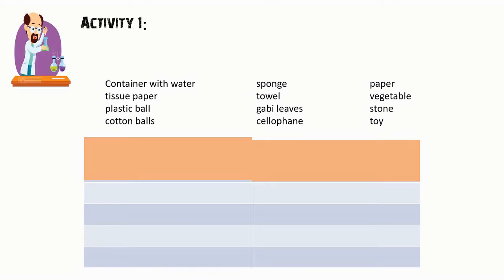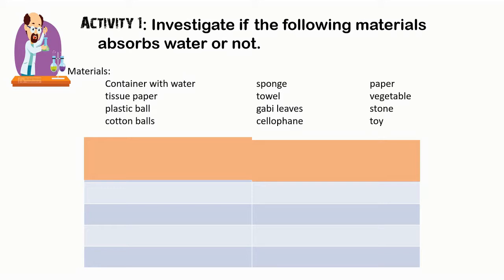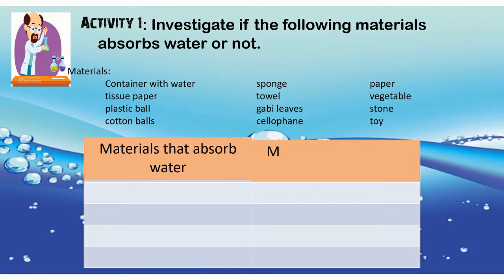Our experiment, our first activity, is to investigate if the following materials absorb water or not. We have here the materials: a container with water, tissue paper, plastic ball, cotton balls, sponge, towel, gabi leaves, cellophane, paper, vegetable, stone, and toy. You're going to list down the materials that absorb water, and list down the materials that did not absorb water as we go on with our experiment.